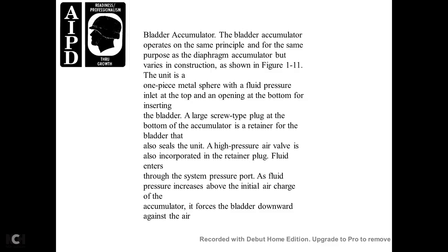Bladder Accumulator. The bladder accumulator operates on the same principle and serves the same purpose as the diaphragm accumulator, but has different construction as shown in figure 1-11. The unit is one piece of metal. Fluid pressure enters from the top opening at the bottom, where the bladder is inserted. A large screw-type plug at the bottom of the accumulator retains the bladder and seals the unit. A high-pressure air valve is also incorporated in the retainer plug. Fluid enters through the system pressure port, and as fluid pressure increases above the initial air charge in the accumulator, it forces the bladder downward against the air.